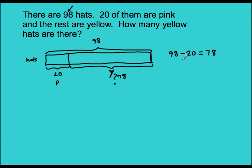That's how many yellow hats there were. All right? Remember in a great bar model, you're going to have a visual drawing, you're going to have a number sentence, and then you're going to answer your question. And it's going to be written in a complete sentence. How many yellow hats are there? There are 78 yellow hats.